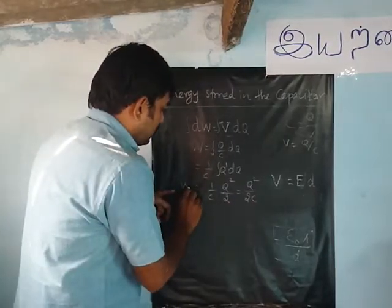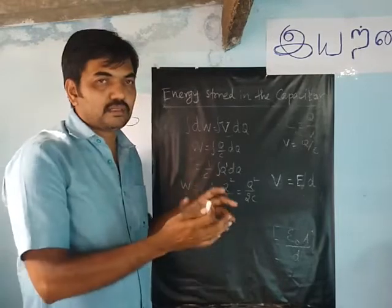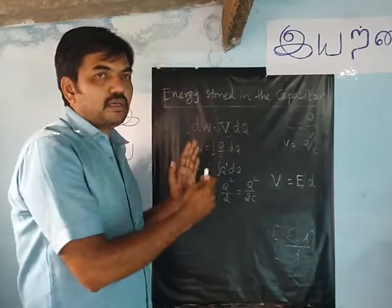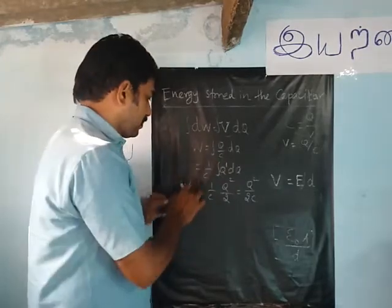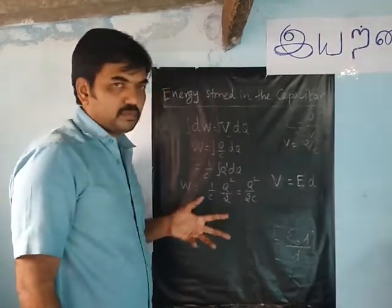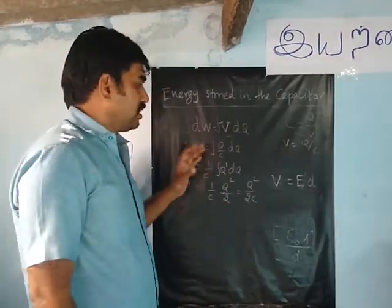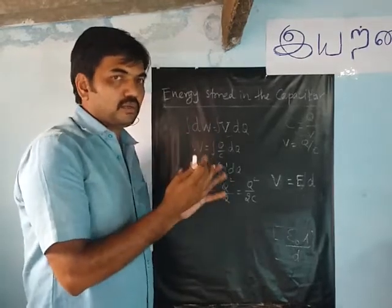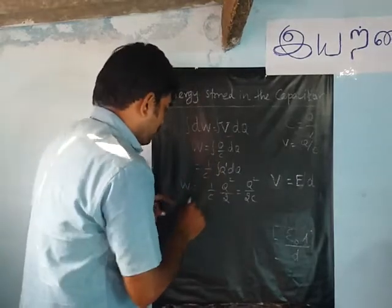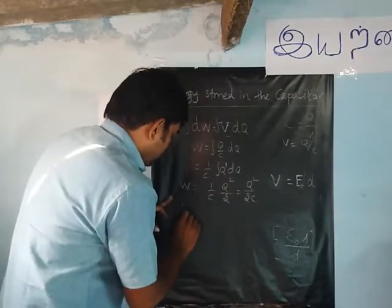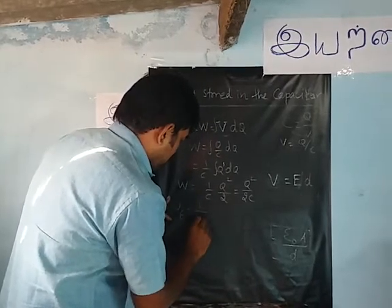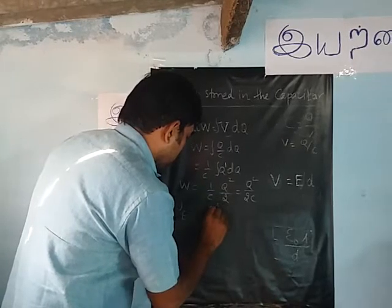The work done on the capacitor is stored as electric potential energy. So u suffix e is equal to 1 by 2c into q squared.